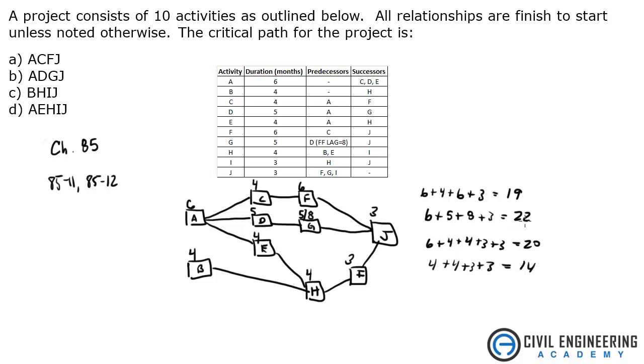So their biggest, longest path here is this guy, which was A, D, G, J. A, D, G, J. That is answer B. That is your critical path.